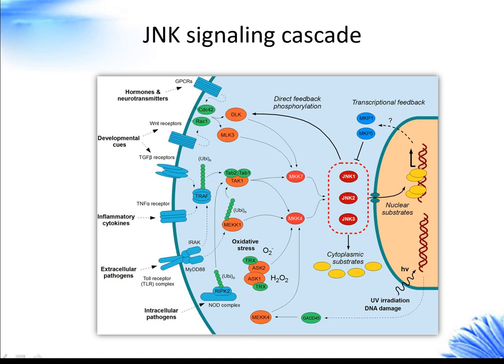Specifically, Ser198 and Thr202 on MKK7 are phosphorylated, enabling them to transmit the signal further to the JNK level. Shortly after activation, like the other MAP2Ks, JNKs translocate into the nucleus where they usually physically associate with their target transcription factors such as c-Jun, ATF, and Elk-1, and activate them.